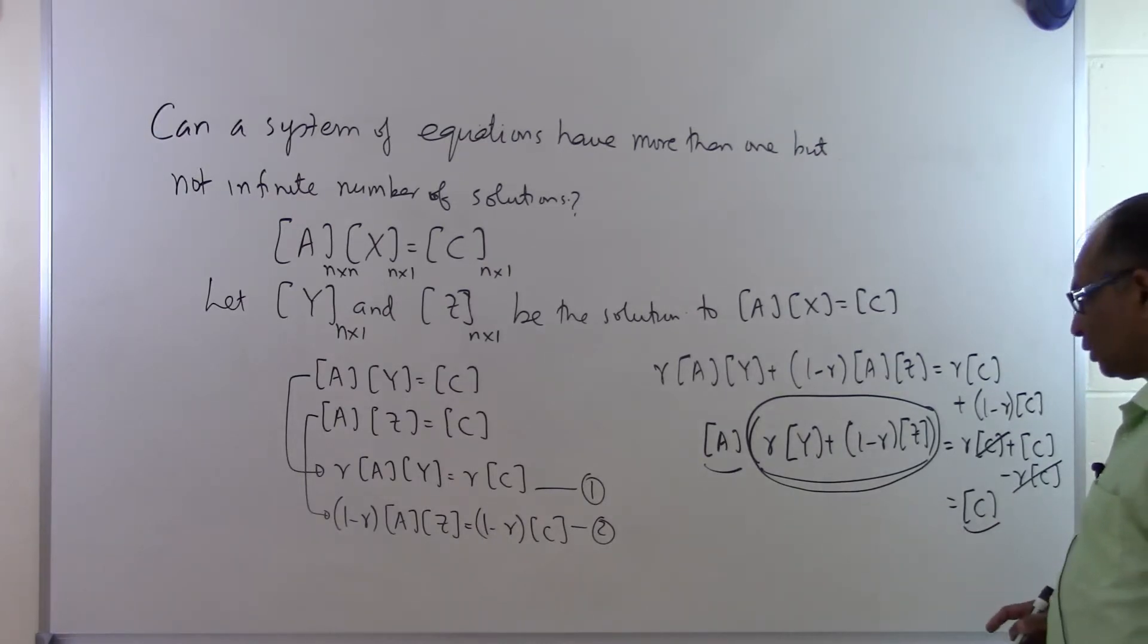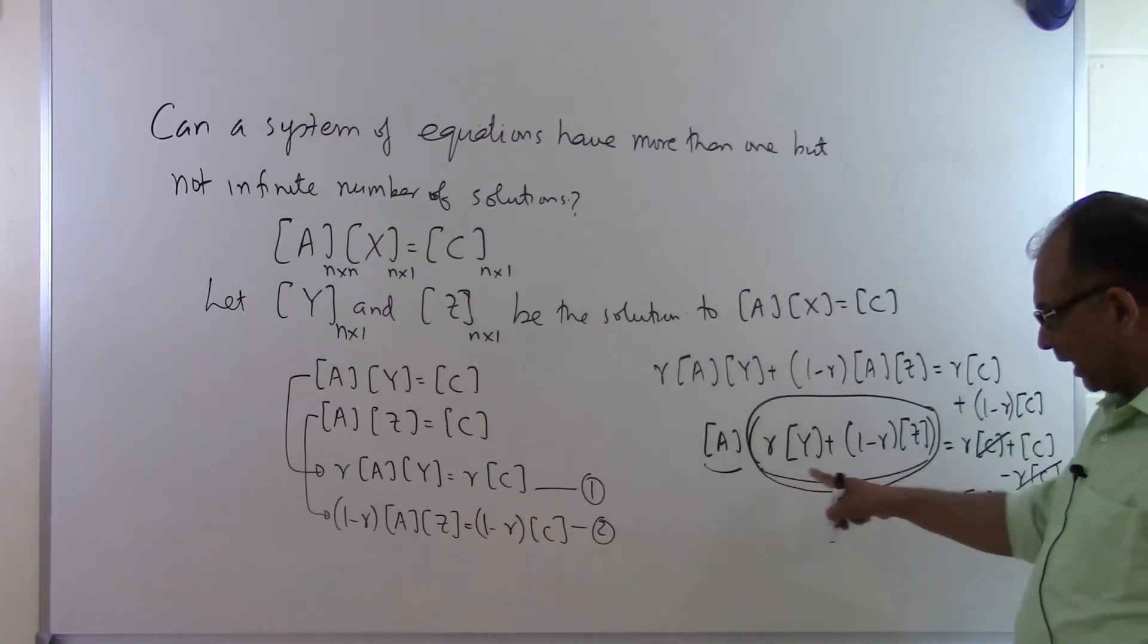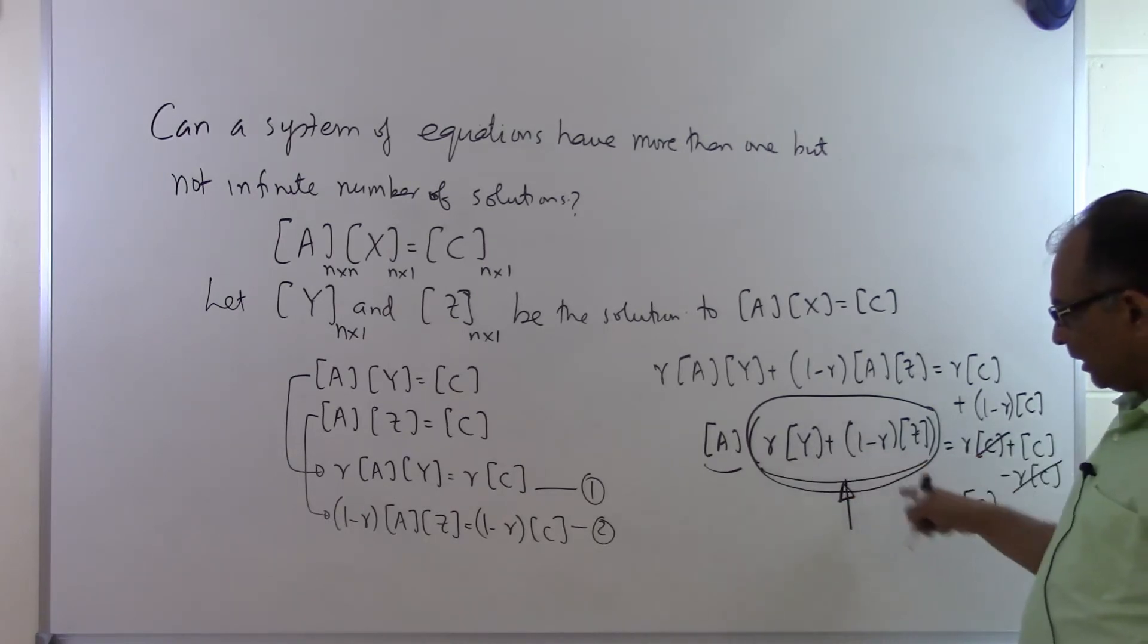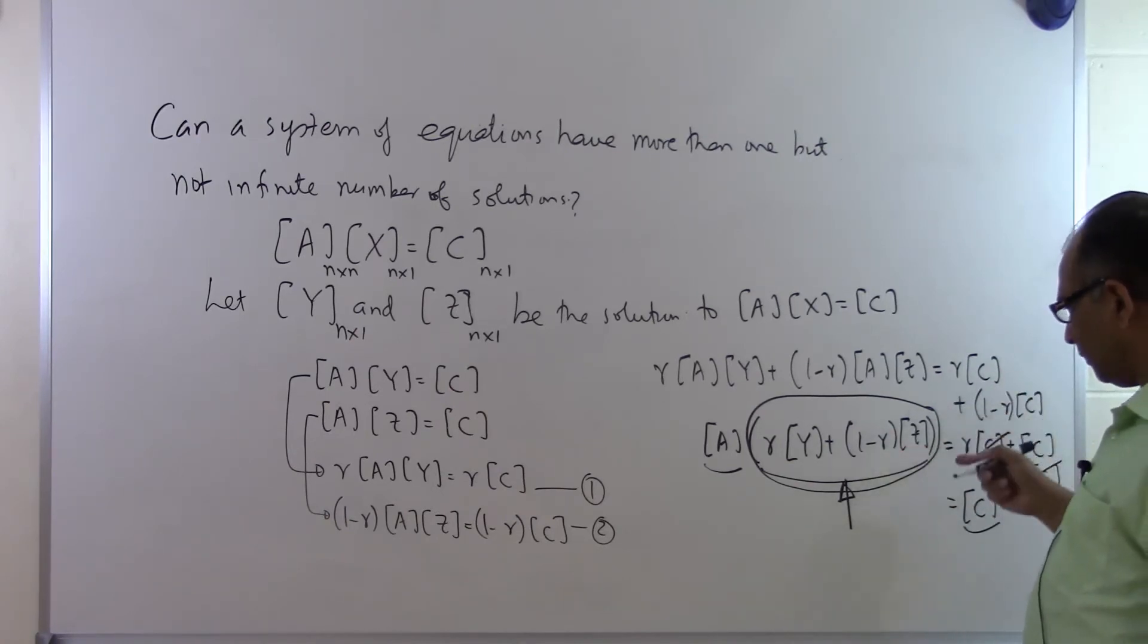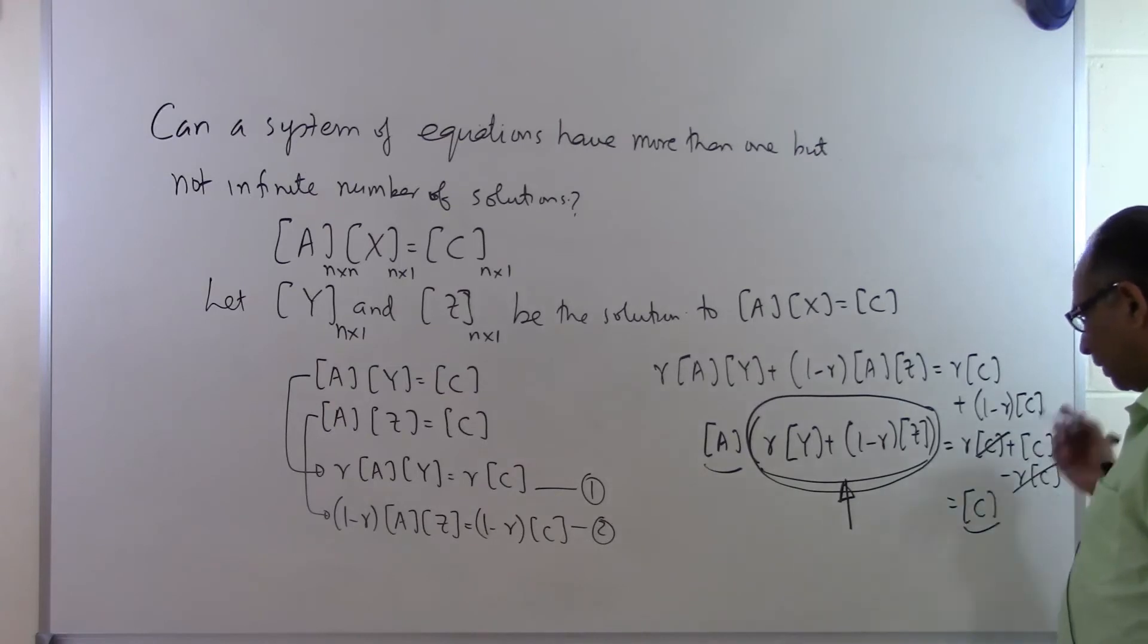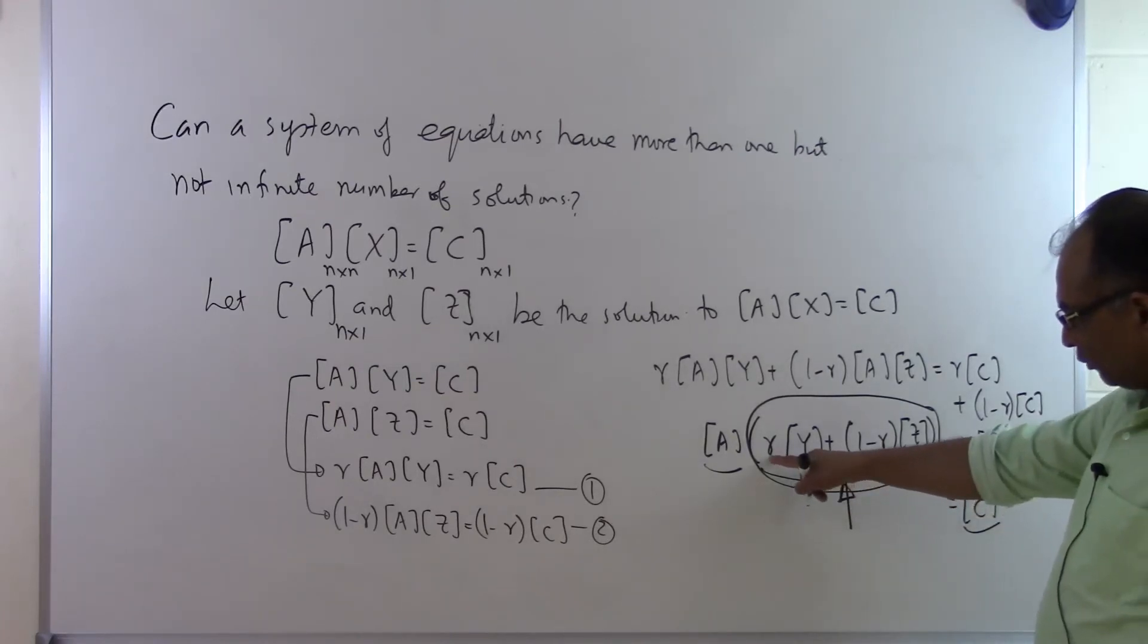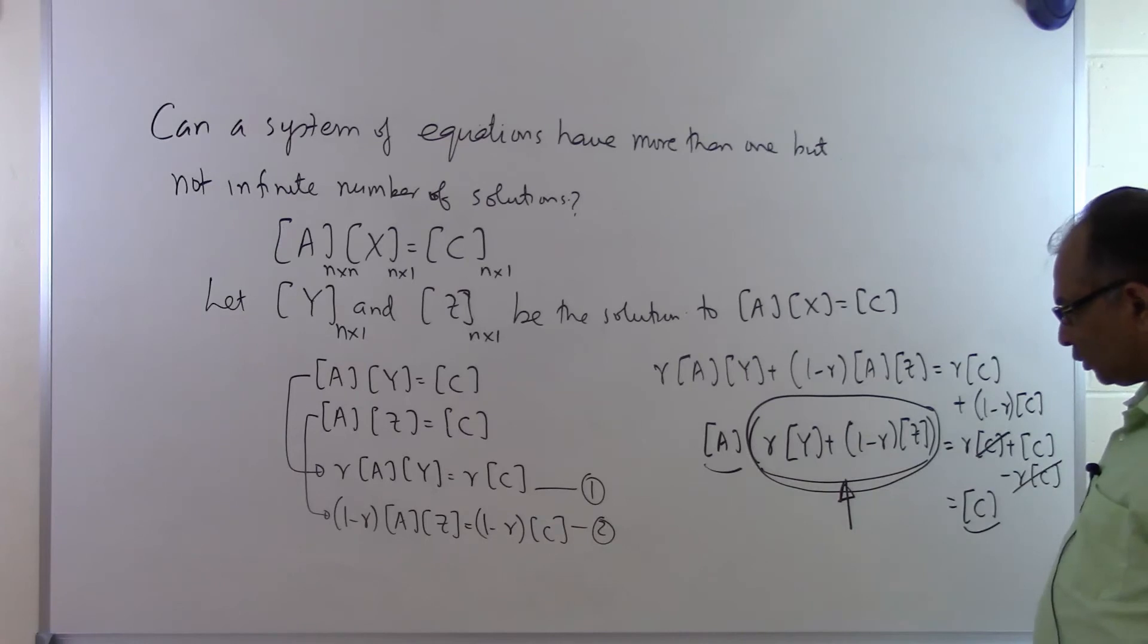If Y and Z are solutions to AX equal to C, then this is also a solution because it satisfies A times some vector equal to the right hand side vector. But we can very well see that here, if this is a solution, R can take any value. R is a scalar. R can take a value of 2, 3, 5, 6.5, 1 billion, 2.2 billion, whatever real number which you might want to choose for R. So that means that I will have infinite combinations of Y and Z which are going to give me the solution to AX equal to C.